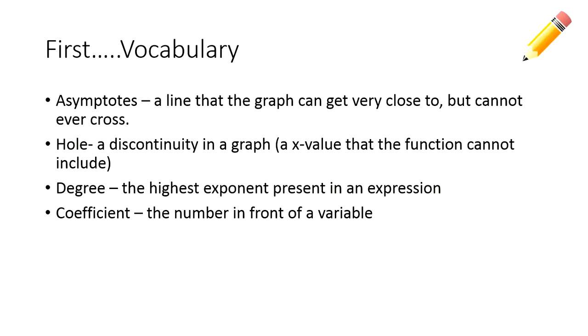A hole is a discontinuity in the graph — basically an x value that the function cannot include. What that's going to look like in our graphs is a big open dot in the middle of the graph. The degree is the highest exponent present in an expression. So if I have x squared plus 3x plus 5, my degree would be 2. The coefficient is the number in front of a variable, so the leading coefficient here would be 1, in front of the x squared.